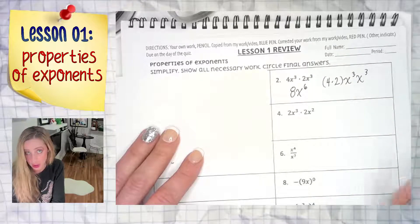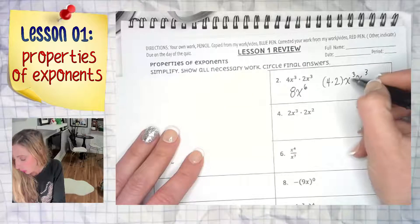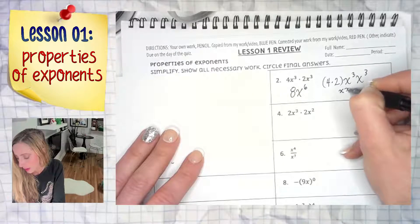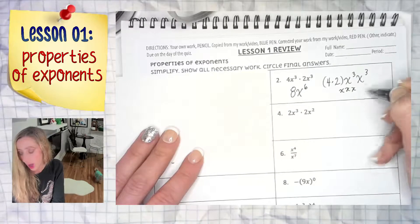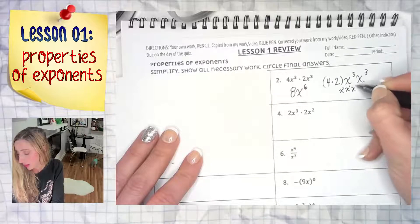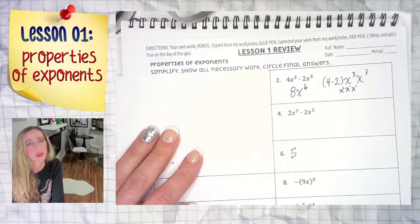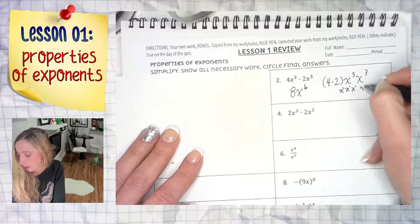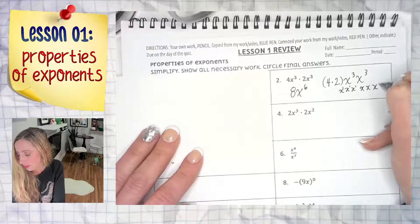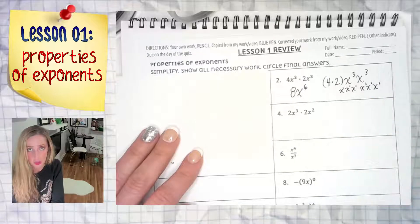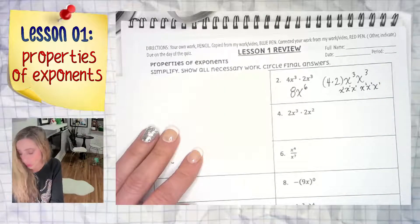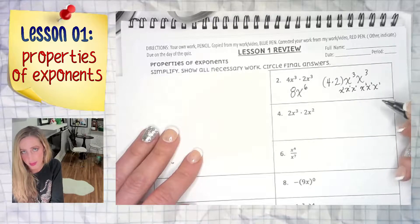So multiplication is multiplication, right? x to the third means x times x times x. They all have an invisible 1 as their exponent, and if you think about it, you certainly didn't multiply those ones to get three. You added them, and then we have three more for the other one. So you would just follow with that logic of adding your exponents when you are multiplying like bases.